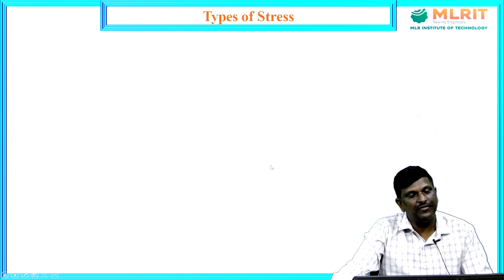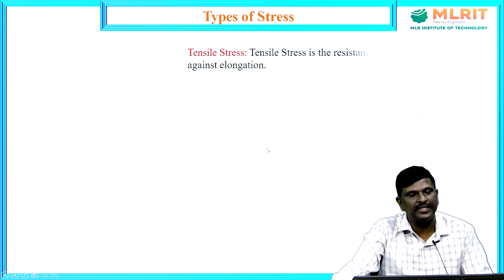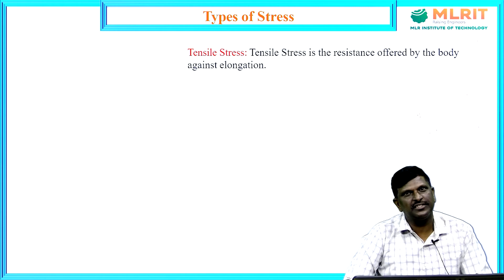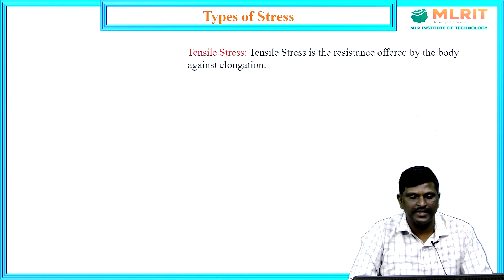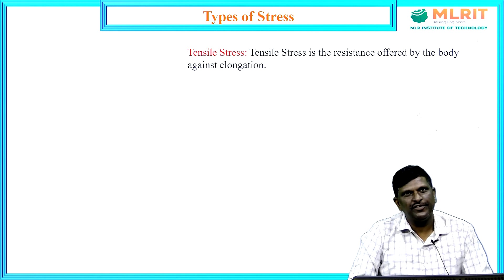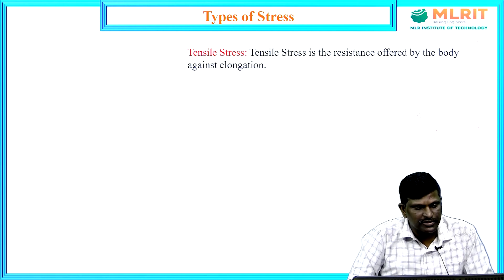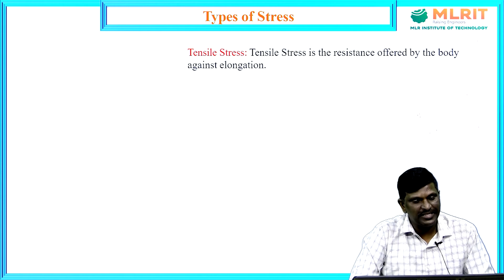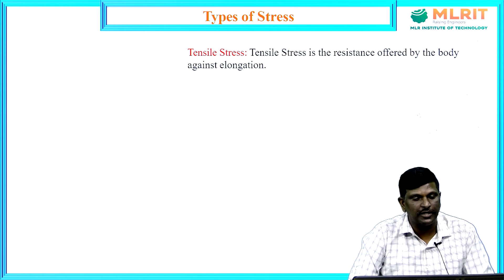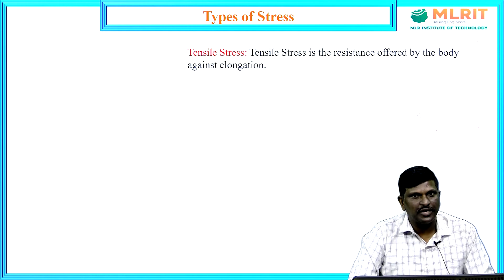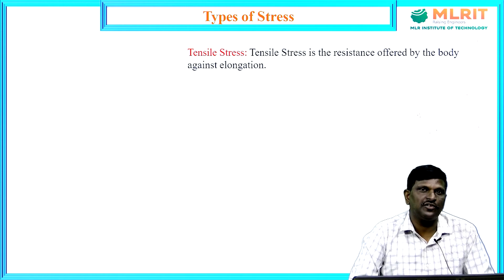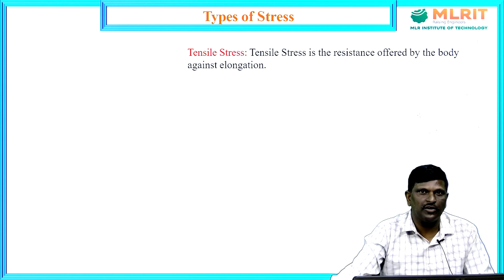Now see the different types of stresses. The first one is tensile stress — it is the resistance offered by the body against elongation. Due to a tensile load, the body will get elongated, and the resistance offered by the body against elongation is called tensile stress.